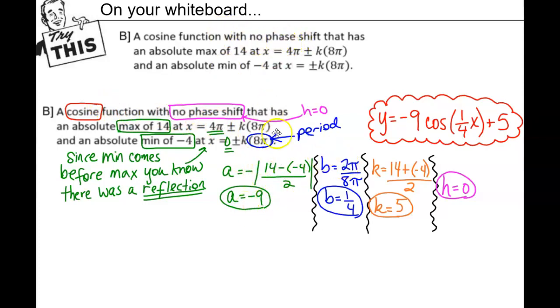Then to find b, the period is determined by what comes between the extrema. k(8π) means the period of this transformed graph is 8π. So we take the period of cosine, 2π, divided by 8π. The π's cancel, and b = 1/4.